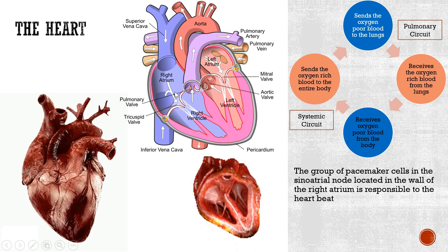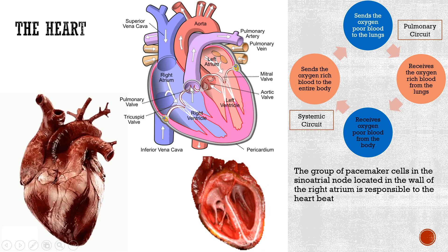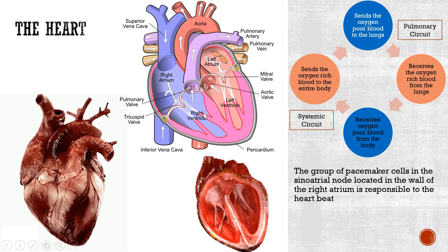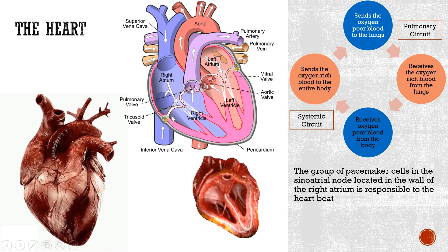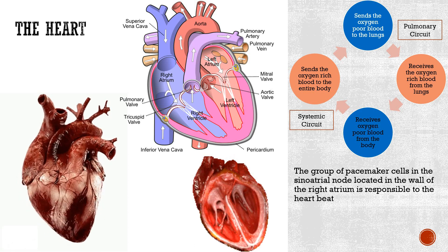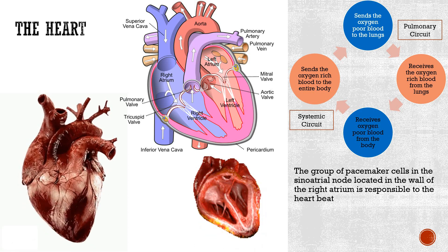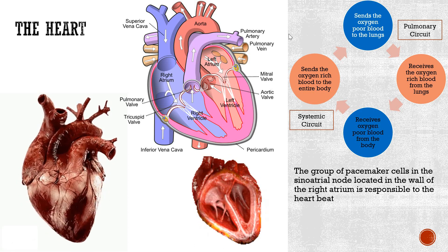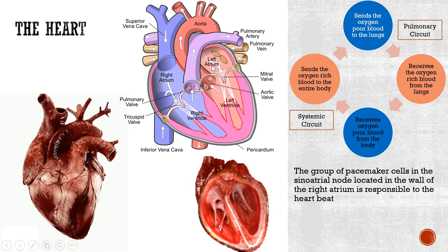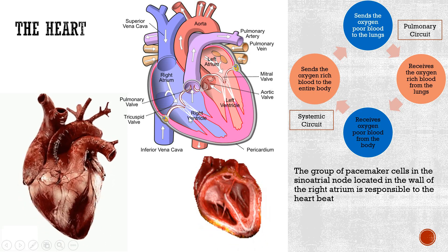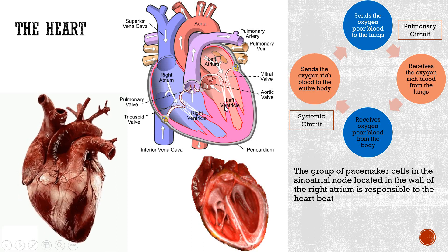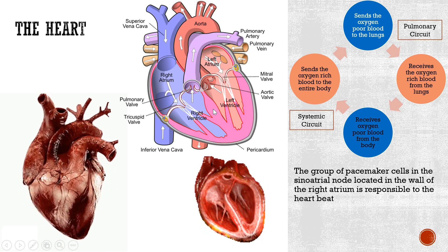These cells produce an electric impulse which causes the chambers of the heart to contract. During each heartbeat, the heart contracts — known as systole — and relaxes — known as diastole. The upper two chambers, the right atrium and left atrium, contract first, followed by the lower two chambers, the right ventricle and left ventricle.